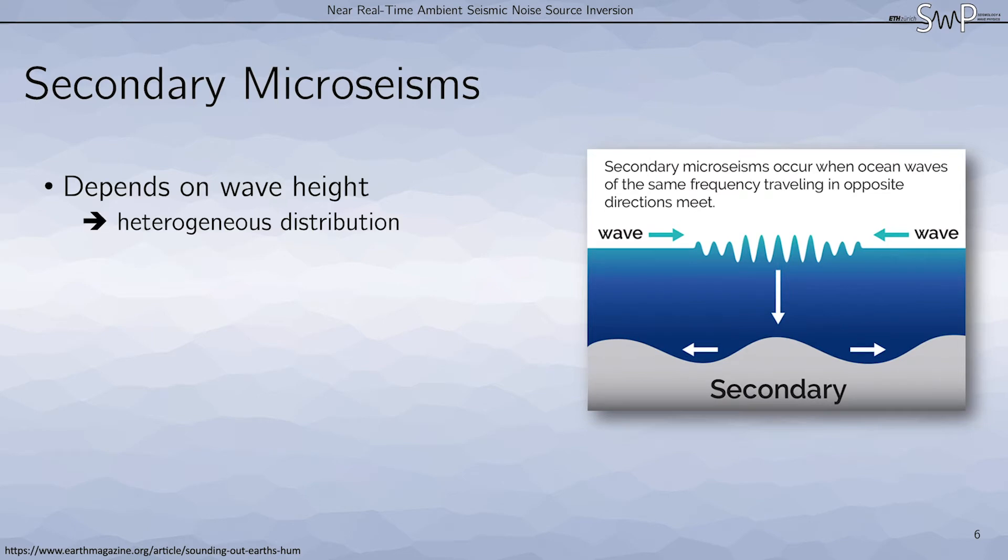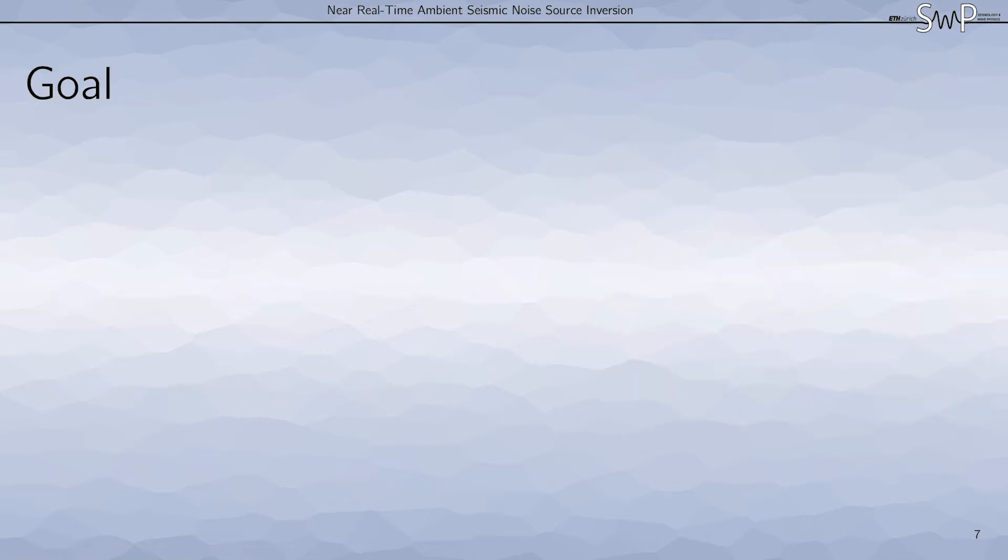These heavily depend on the wave height, which means the distribution is very heterogeneous and changes constantly. The source mechanism is quite well understood and the main seismic waves generated are surface waves. The goal of our research is to perform daily inversions of the noise distribution of the secondary microseisms.